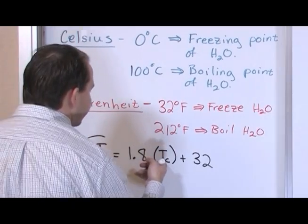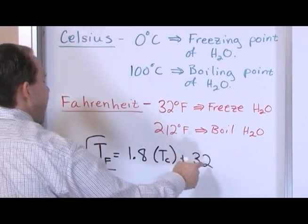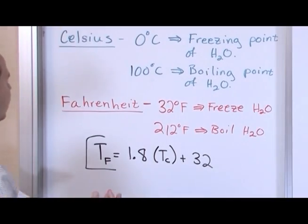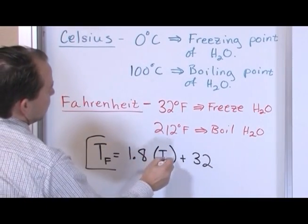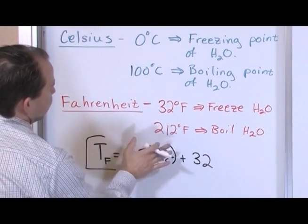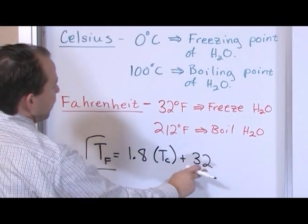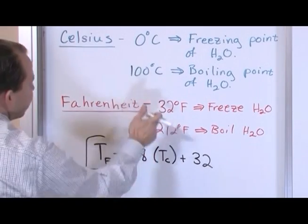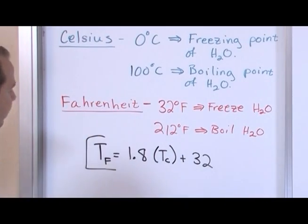This is what you use to convert between Fahrenheit and Celsius. If you know the temperature in Celsius, you stick it in, multiply, add 32, and you get Fahrenheit. Just to prove that: for 0 degrees Celsius, this term disappears and you're left with 32 degrees Fahrenheit — the freezing point of water. Makes sense. And if you put 100 in and do the math, you'll find it comes to 212.